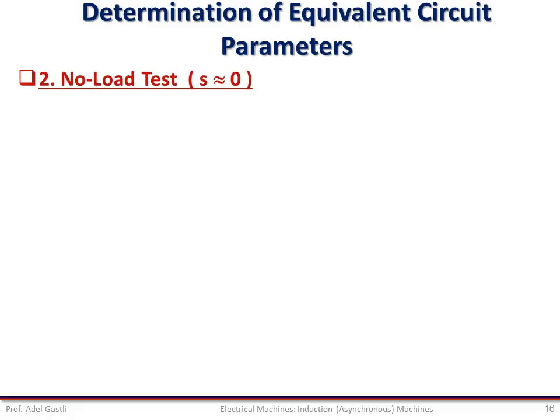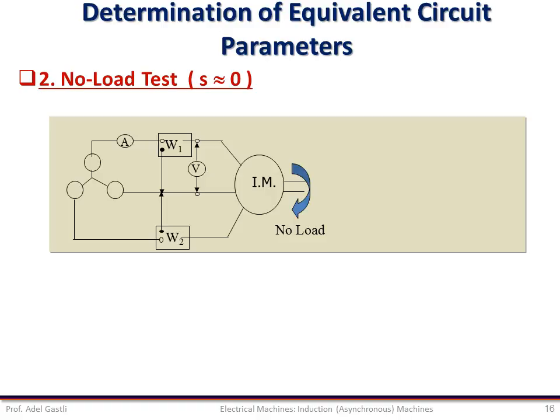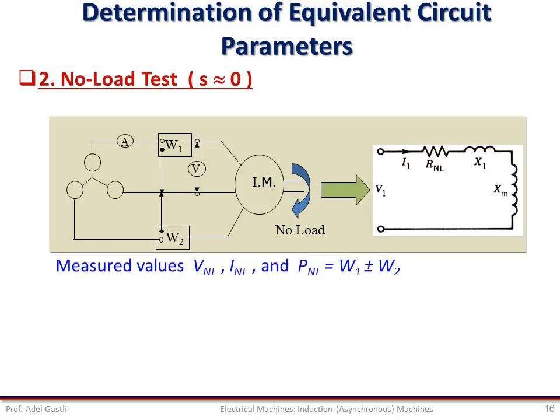The second test is the no-load test. In this test, the machine is not loaded mechanically. We apply rated voltage at the stator terminals and keep the rotor rotating freely. We measure the voltage, current, and power using one voltmeter, ammeter, and wattmeter. The equivalent circuit at no-load is equivalent to an open rotor circuit, because at no-load the slip is equal to zero, so R'2/S becomes almost infinity — an open circuit — and mainly the current flows on the stator side.